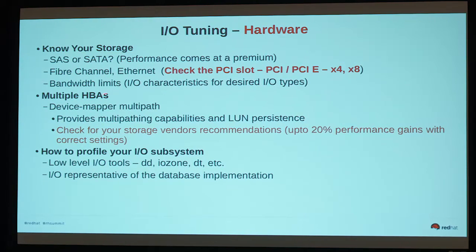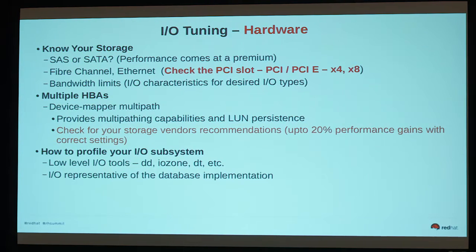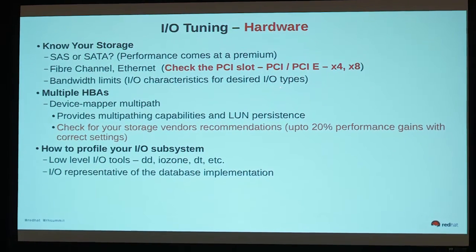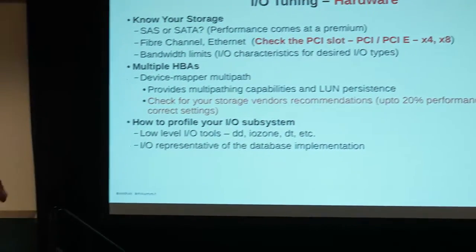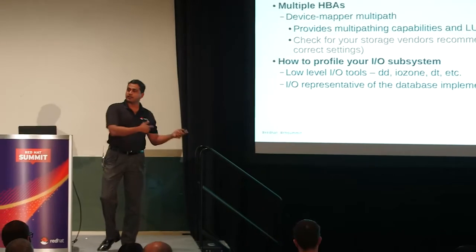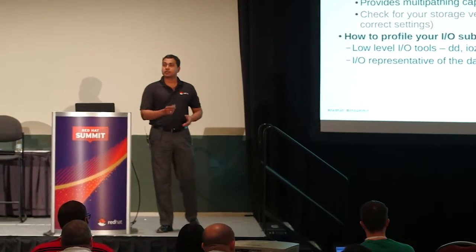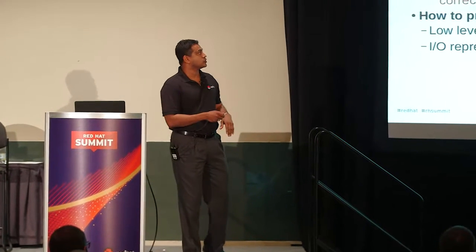For I/O tuning, you can start with SAS or SATA, fiber channel, ethernet, or SSDs. A key thing I point out to customers is we ran into a situation where they had 10 GbE but were not getting more than 600 or 650 MB/s. When I ran LSPCI, they had it in a legacy PCI slot. Many systems have legacy PCI slots for backward compatibility, so make sure that if you're buying a high-speed PCI device, it goes into the right slot.